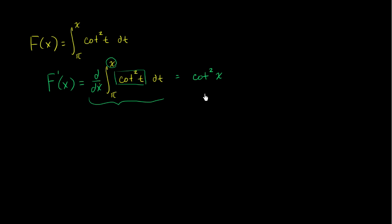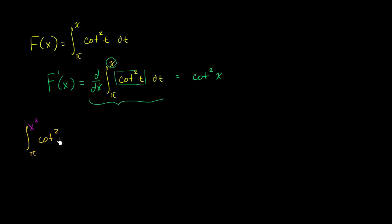Now let's mix it up a little bit. Let's say that you had the expression — the definite integral from π, but instead of from π to x, let's say it's from π to x squared. And I'll write that x squared in a different color to make it clear. So from π to x squared of cotangent squared of t dt.